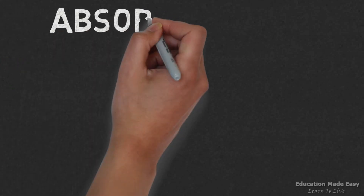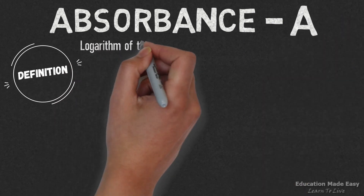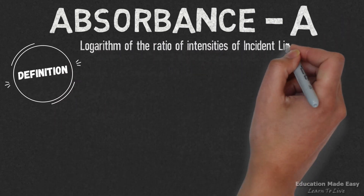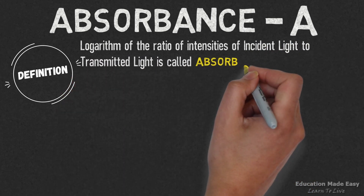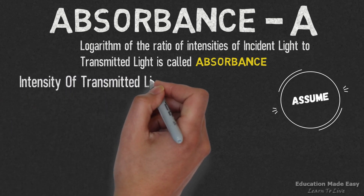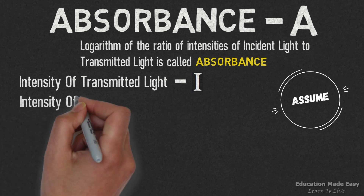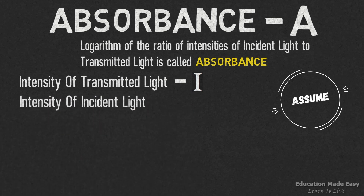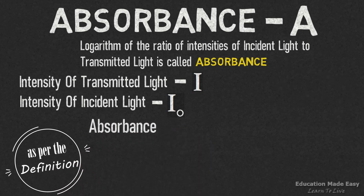Now let us discuss about absorbance. It is denoted by the simple A. As per the definition, logarithm of the ratio of intensities of incident light to transmitted light is called absorbance. Here, let us assume intensity of transmitted light as I and intensity of incident light as I₀.